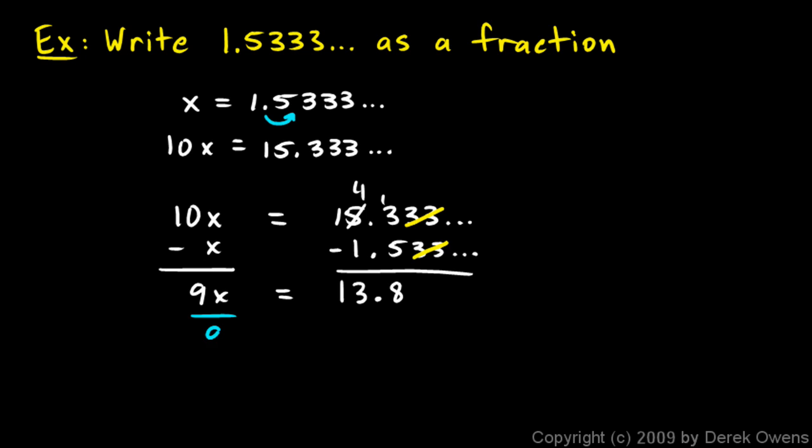So then I divide both sides by 9, and that leaves me with x is 13.8 over 9. And I want this written as a rational number, which means I need an integer on the top and on the bottom. And right now I don't have an integer on the top because of that decimal point. So I'm going to multiply the top and the bottom by 10, and that gives me 138 over 90.